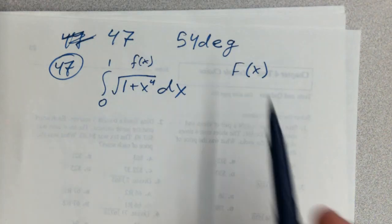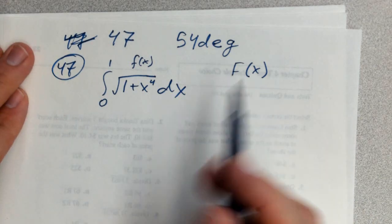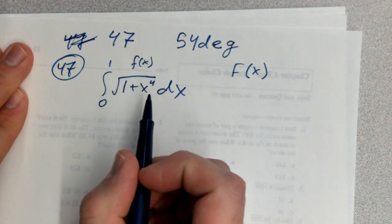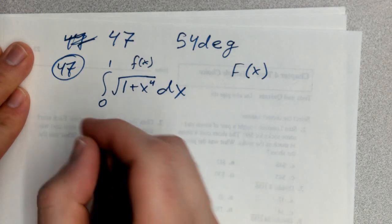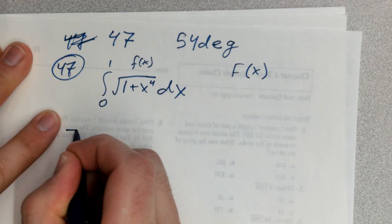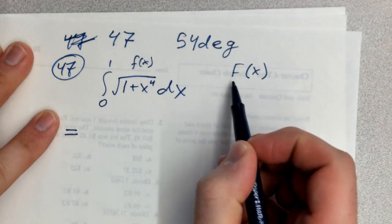And so we're not going to end up with a number because we want our answer in terms of capital F of X. This is a function that we can't anti-derive using the rules that we are aware of at this point. And so what we're going to do is write that the anti-derivative of this is what they told us it was, which is capital F of X.